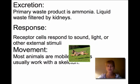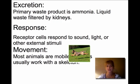Animals also need to excrete waste products. The primary waste product is ammonia, which is a liquid waste filtered by kidneys in larger animals, but all animals have to excrete waste in some form.